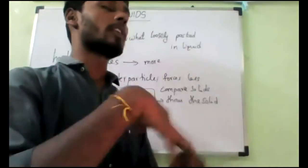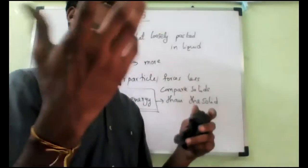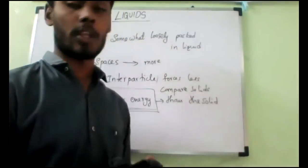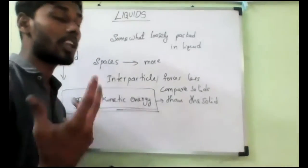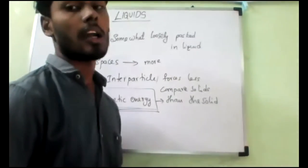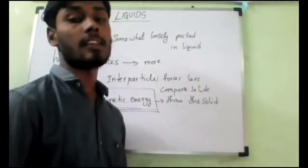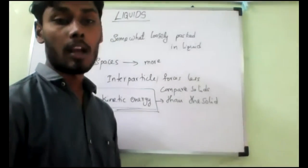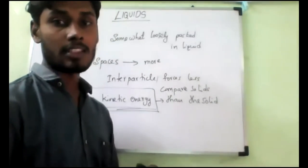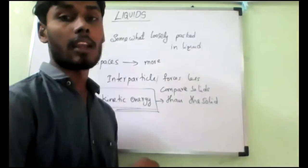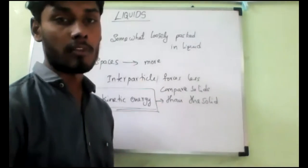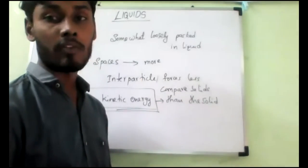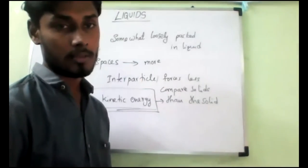That is why liquid will keep its shape in different containers which have different shapes. They will always come to the shape of the container easily, because the particles can always move positions — they don't have fixed positions.